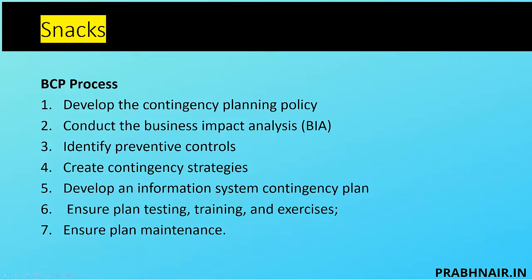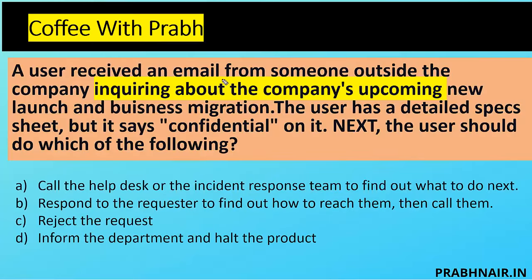Next coffee shot: a user receives an email from someone outside the company inquiring about the company's upcoming new launch and business migration. The user has a detailed specification sheet marked confidential. What should the user do next? Option A is call the help desk or the incident response team to find out what to do next.